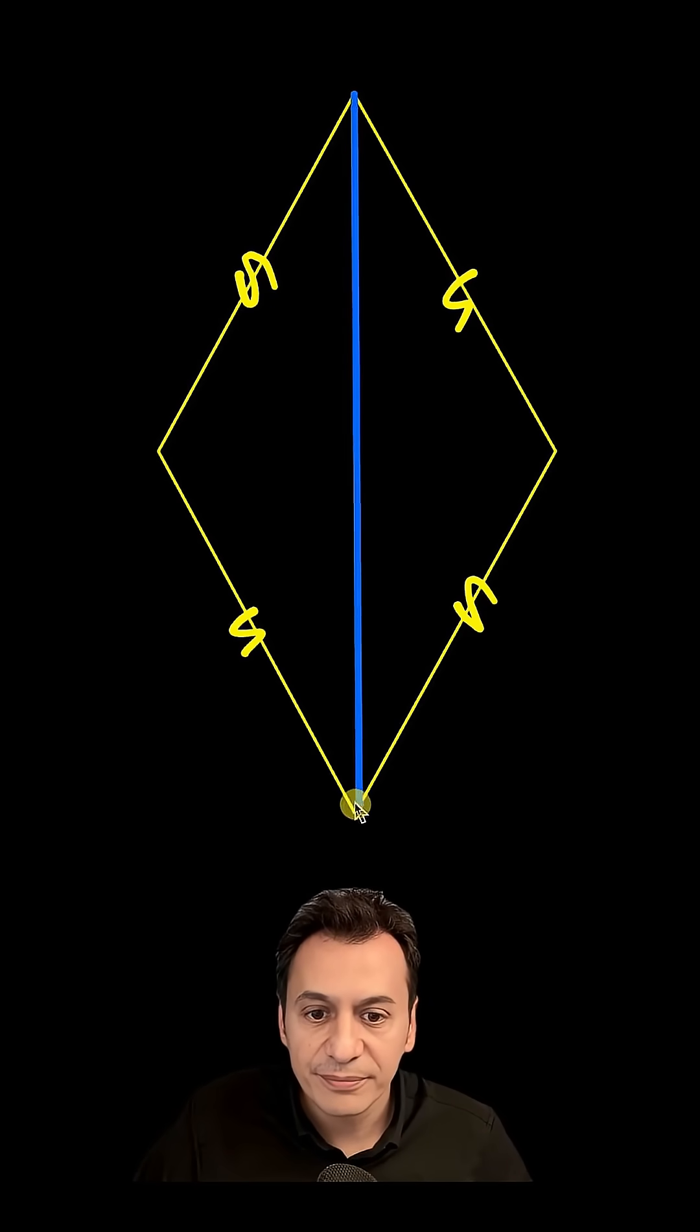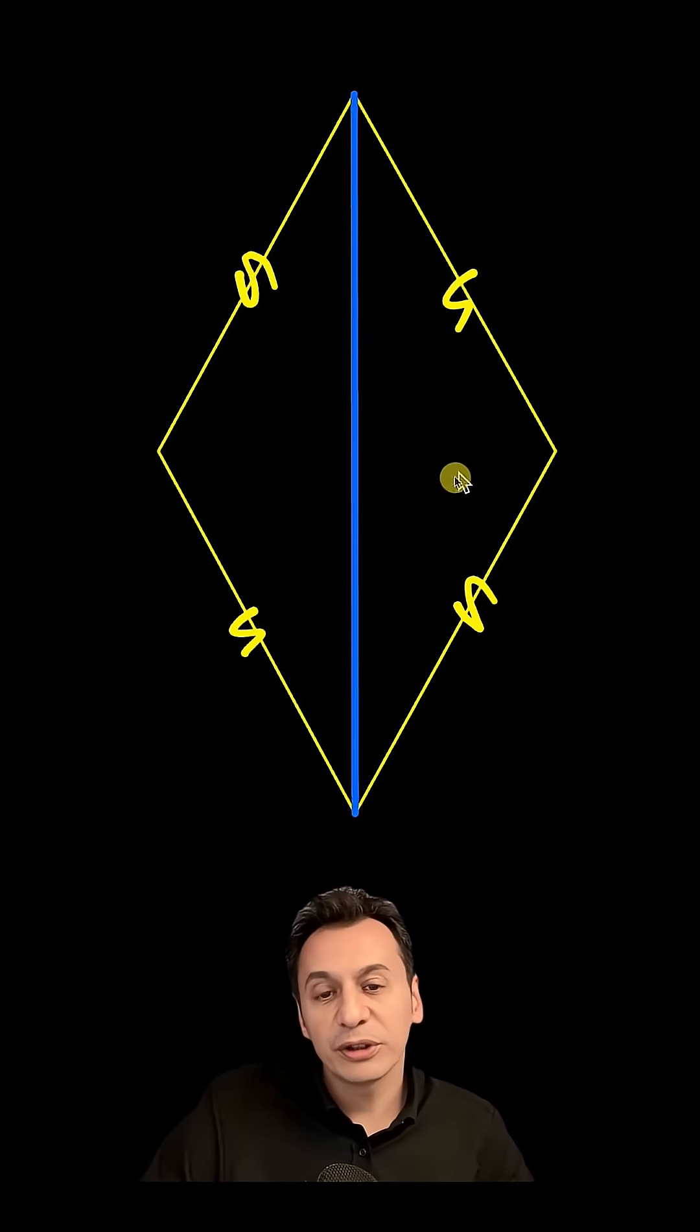First, let's draw this diagonal. The first thing I notice is that two congruent isosceles triangles are formed.